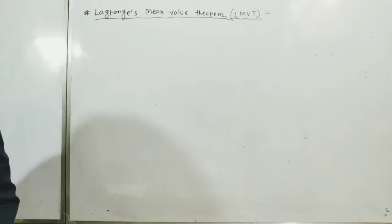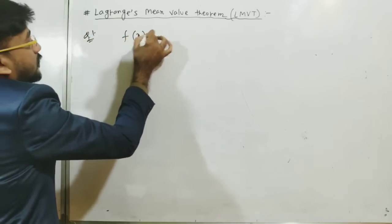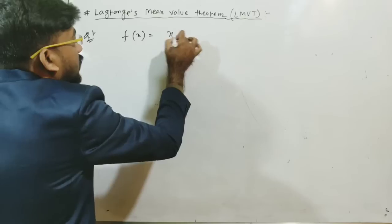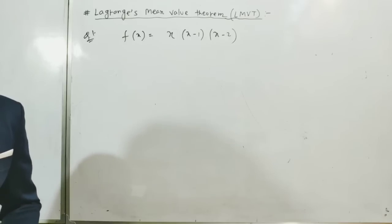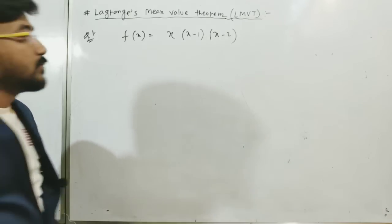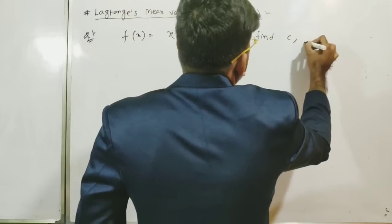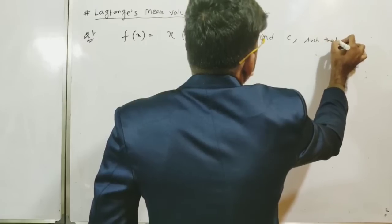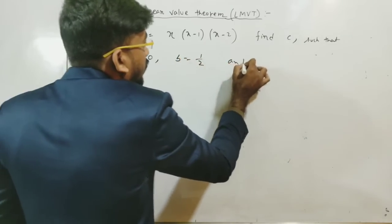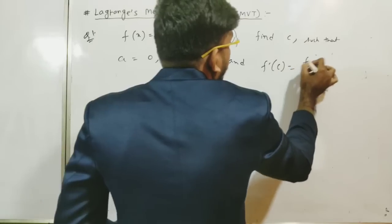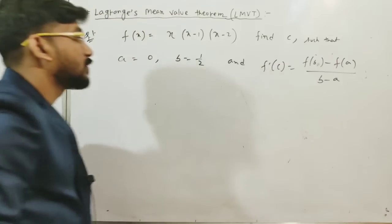Let's look at our first problem. A function is given: f(x) = x(x − 1)(x − 2). We need to find c such that a = 0, b = 1/2, and f'(c) = (f(b) − f(a)) / (b − a) — applying Lagrange's Mean Value Theorem.